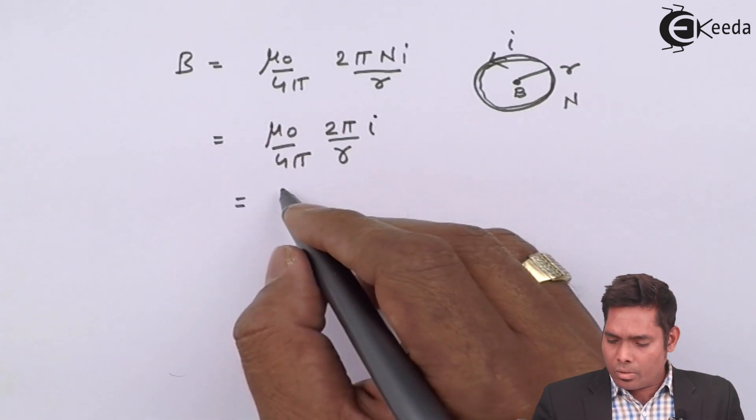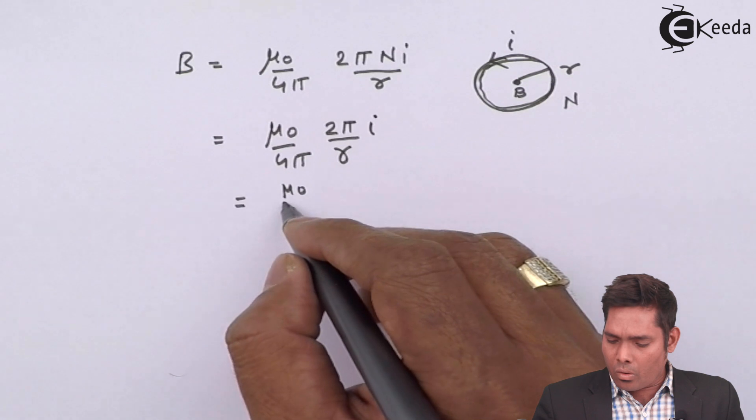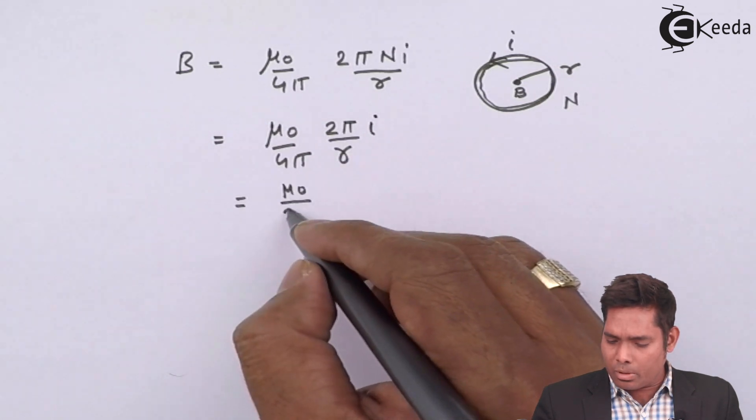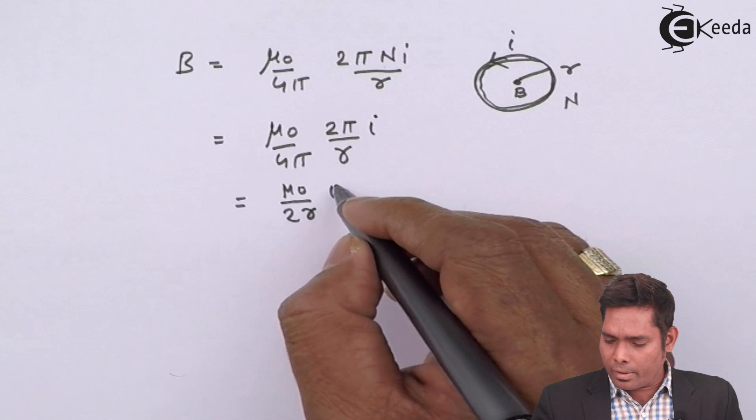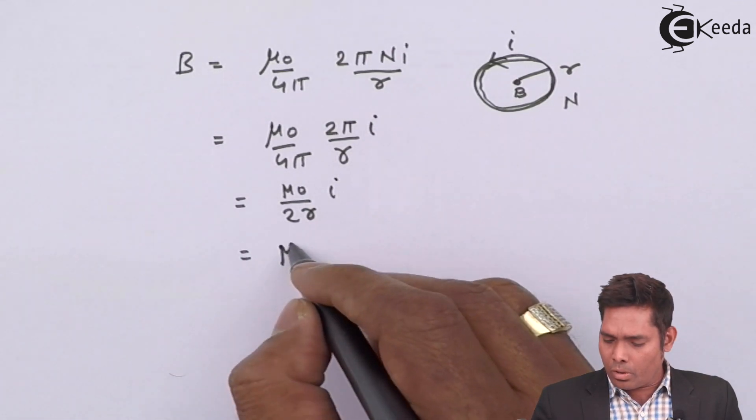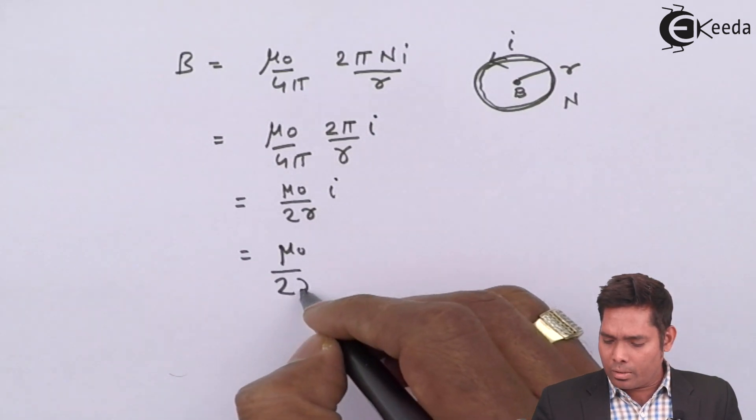This is mu 0 upon, this 2 pi, 2 pi will cancel, 2 is left, 2 r into i. This is mu 0 upon 2 r, i.